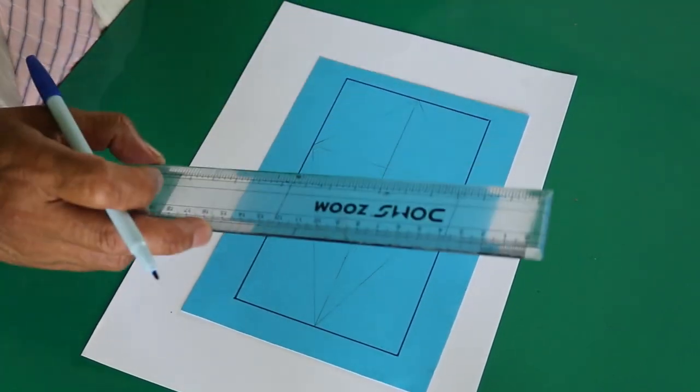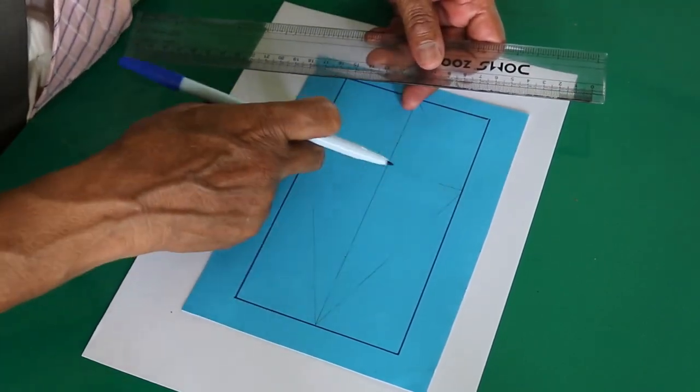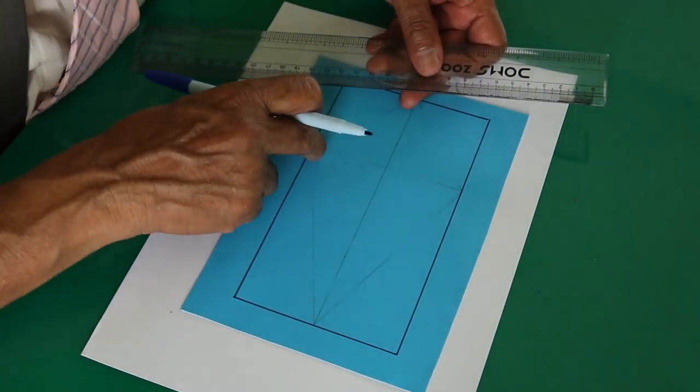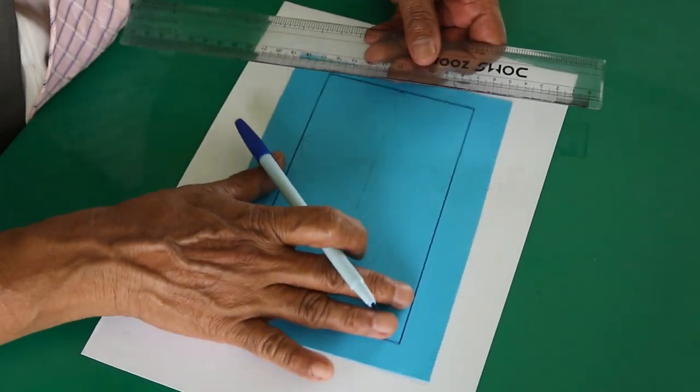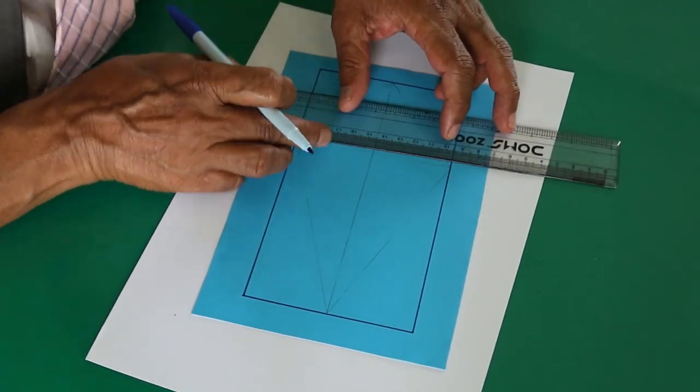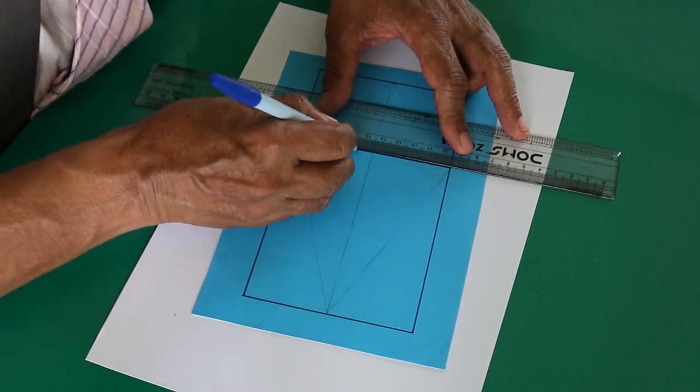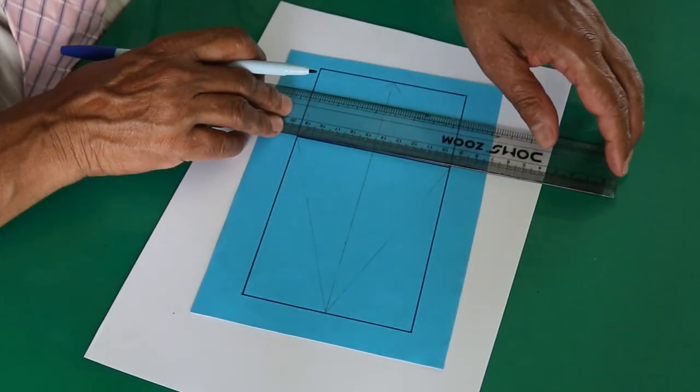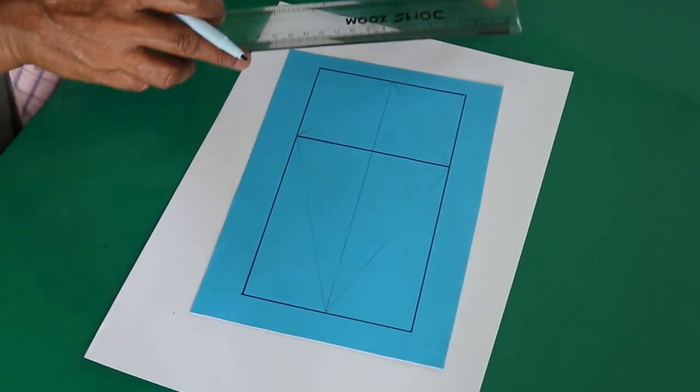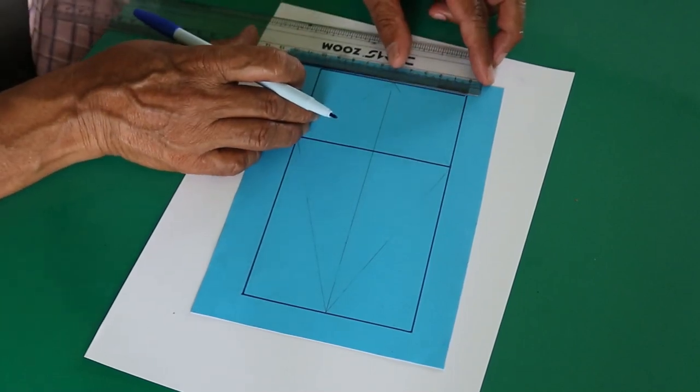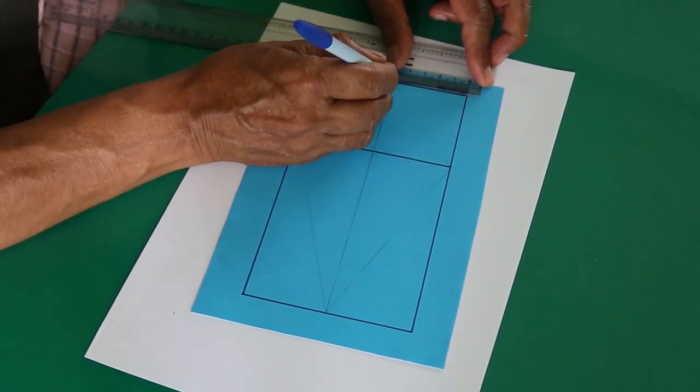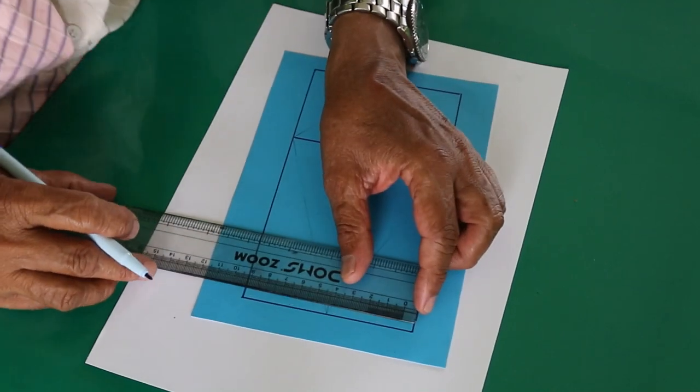In this rectangle, draw a perpendicular from any point. Draw a perpendicular from here. From the midpoint of these two sides along the breadth, that one is the midpoint and this one is the midpoint.